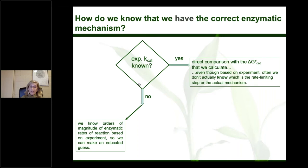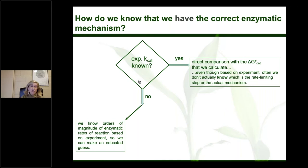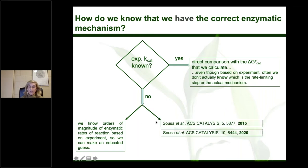We know the orders of magnitude of enzymatic rates of reaction based on experiment, so you can make an educated guess. If the rate of a reaction gives you a ΔG of activation of 30 kcal/mol, something is wrong — either the mechanism is wrong, the calculated value is wrong, or the Hamiltonian is not good enough. With 30 kcal/mol the rate of reaction is too slow for any reaction to occur in your body.